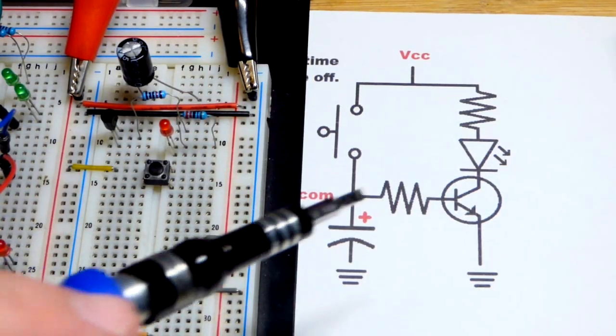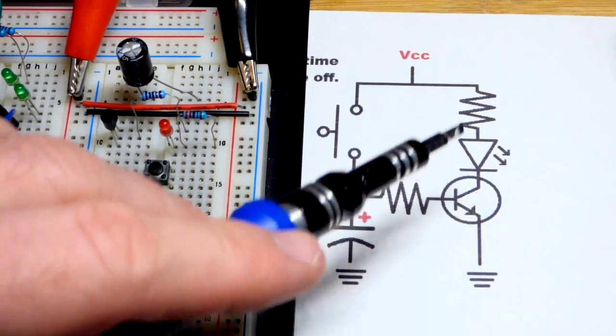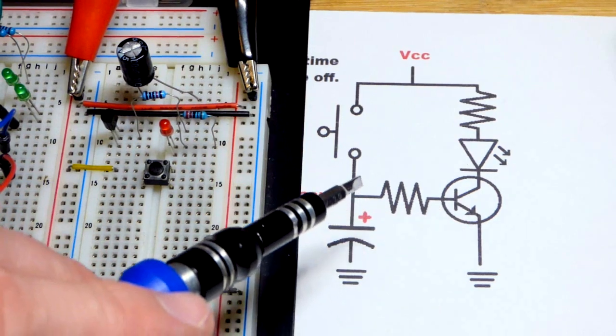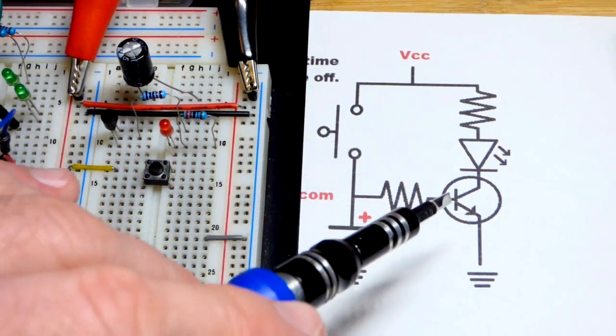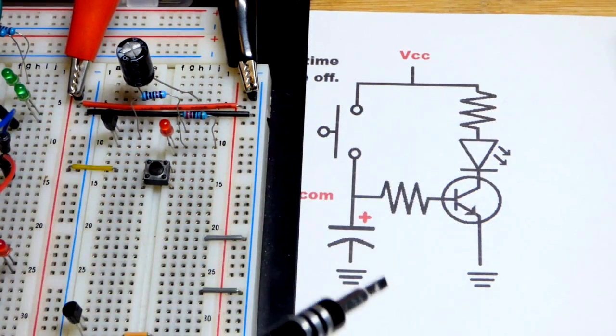So now in this video for this series, we come back to the NPN bipolar junction transistor switch. When we close the switch, that gives the base current, the transistor turns on.